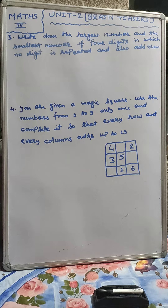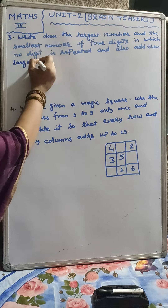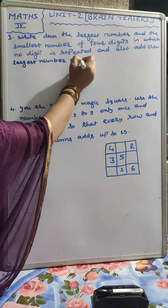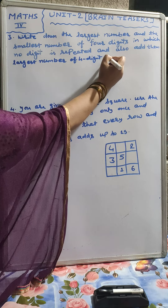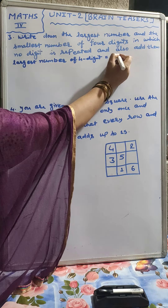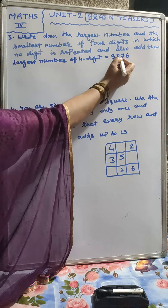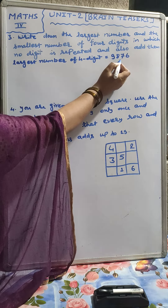Write down the largest number and the smallest number of 4 digits in which no digit is repeated, and also add them. At first we will write the largest number of 4 digits. As we know, the largest single digit is 9, then 8, then 7 and 6. So the largest 4-digit number with no repeated digit is 9876.